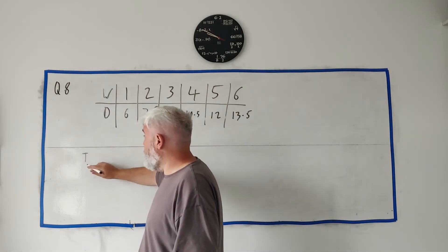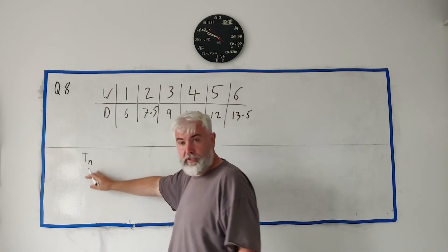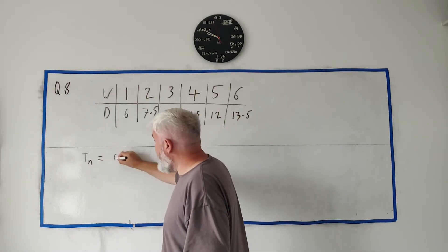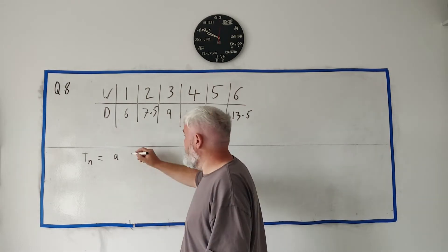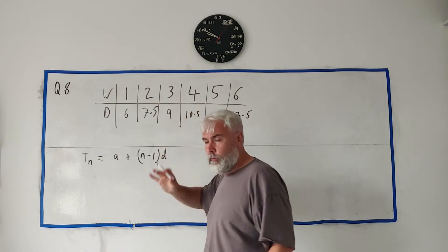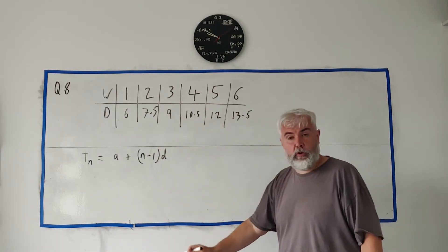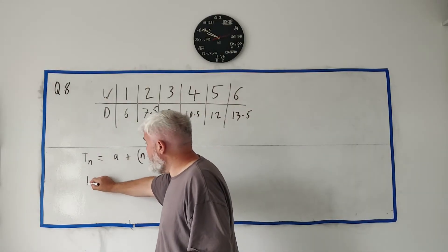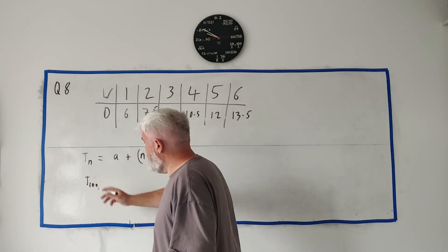The term, the nth term, the first term, the second term, the hundredth term, is equal to a, which means the first term, plus n minus 1 times d. That's a formula we're used to using, it's in your formula book. You're given this formula and we know lots of this. They're asking about t_100, so n is 100.